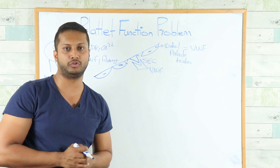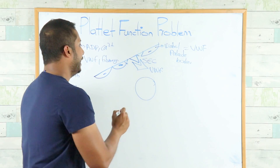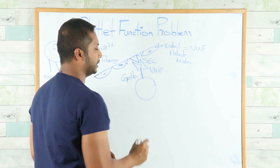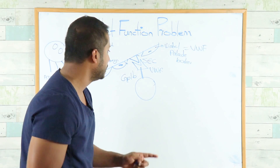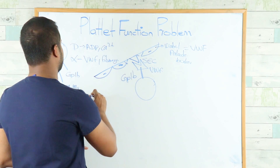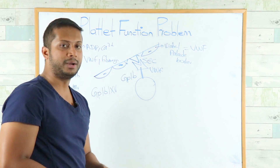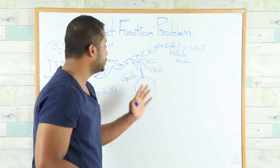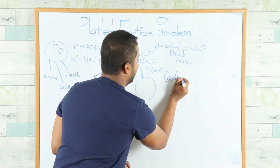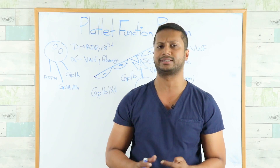Von Willebrand factor binds to the subendothelial collagen. The next step is the platelet binding to von Willebrand factor — this is done via the GP1b receptor, also now called GP1b9-5. This step is known as adhesion. So adhesion is complete: the platelet binds von Willebrand factor via GP1b.